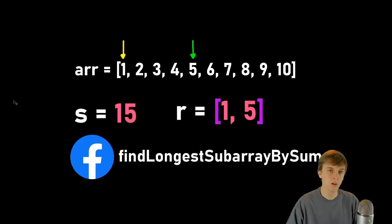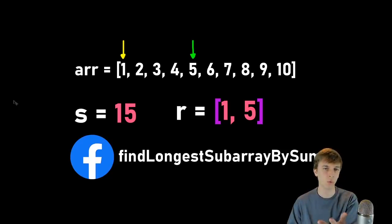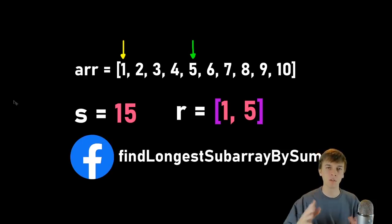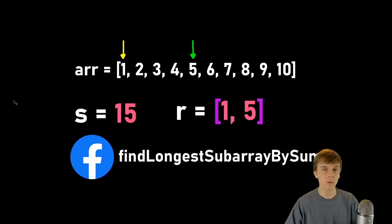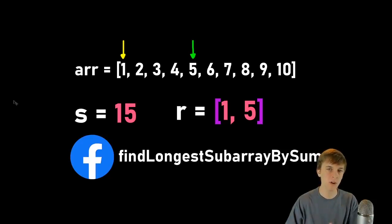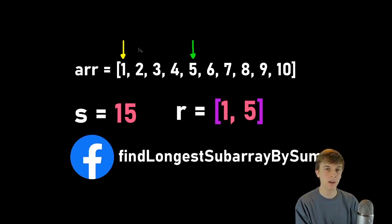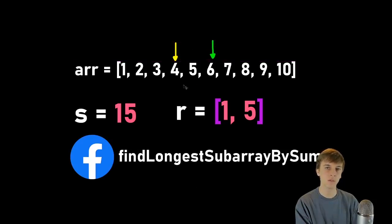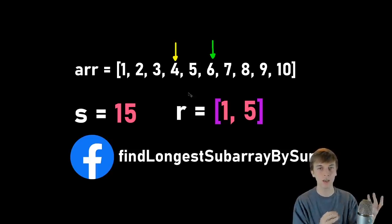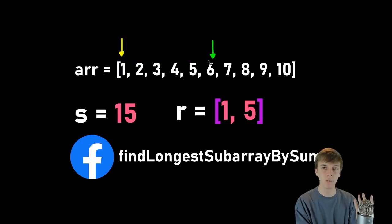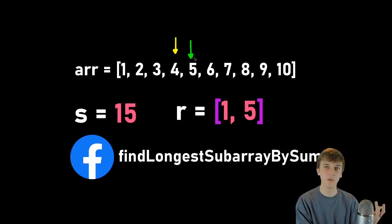Here's another example. We might get this array and want to find the longest subarray whose elements add up to that sum. In this case it's going to be from the first element to the fifth element: one plus two plus three plus four plus five adds up to 15. There's another subarray that adds up to 15 — six plus four is ten plus five is 15 — but that's not as long as the one from here to here, which has five elements rather than three.